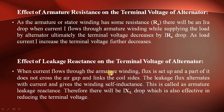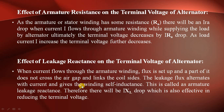Therefore there will be an IXL drop. This armature leakage reactance is also effective in reducing the terminal voltage. When current flows through the armature winding, flux is set up; the part that cannot cross the air gap links the coil sides, producing leakage flux that gives self-inductance. This results in an IXL drop which reduces the terminal voltage.